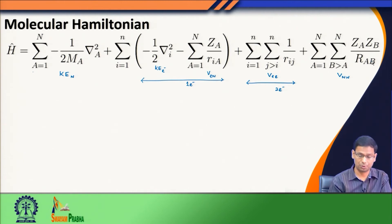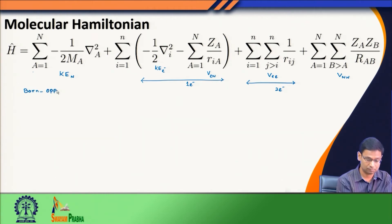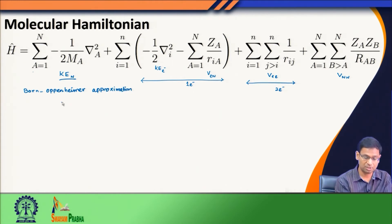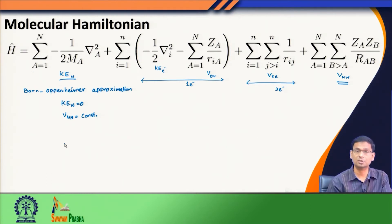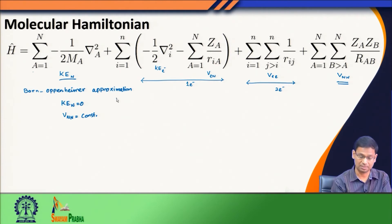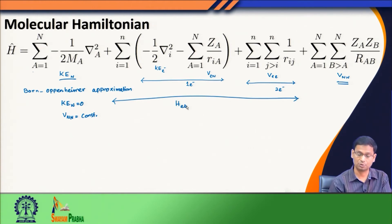This is an outcome of the Born-Oppenheimer approximation. If we invoke the Born-Oppenheimer approximation, the kinetic energy of nuclei becomes 0, and the potential energy between nucleus and another nucleus becomes a constant — because we are telling that the nuclei are frozen while we are solving the electronic part. So we are left with the one-electron terms and the two-electron terms, and we call this the electronic Hamiltonian.